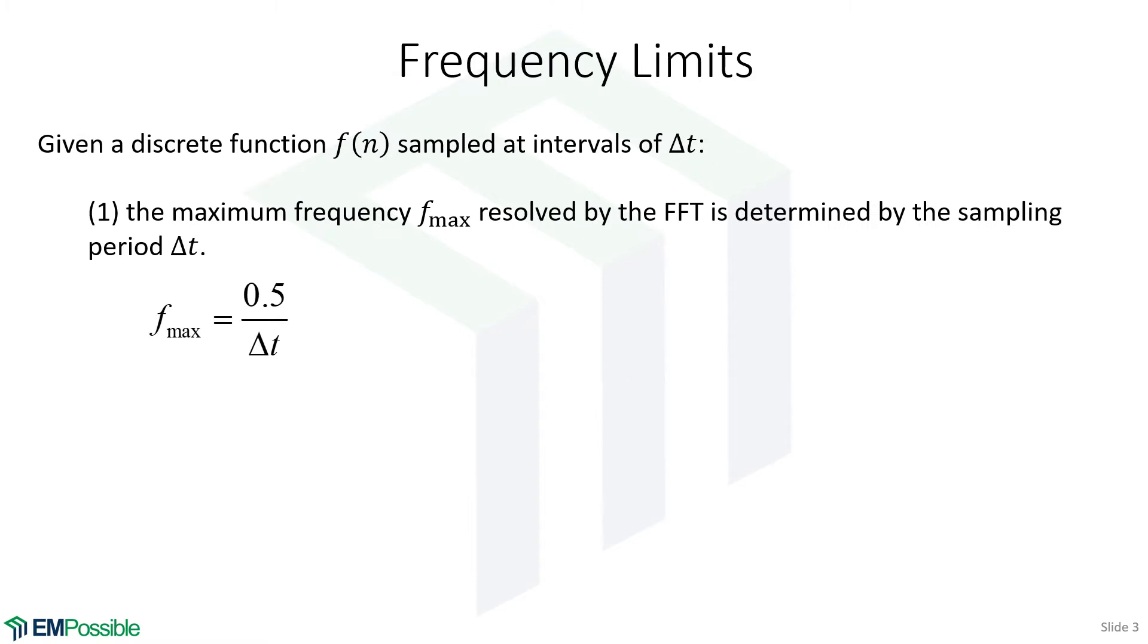Let's say we have a sampled function, a discrete function f of n, sampled at an interval of delta t. Given delta t, there's a maximum frequency that we're able to resolve. That maximum frequency is 0.5 over delta t, or 1 over 2 times delta t. So the sampling period sets a limit on our maximum frequency.